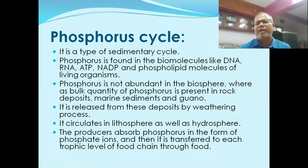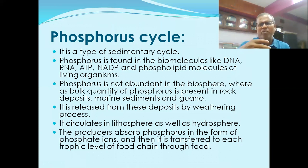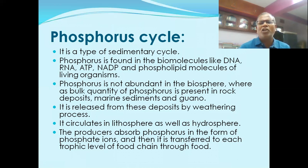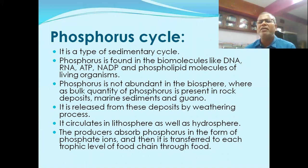Phosphorus is released from rock deposits by the weathering process. It circulates in the lithosphere as well as in the hydrosphere — that is, land and water. The producers absorb phosphorus in the form of phosphate ions, and then it is transferred to each trophic level of the food chain through food. Plants have the three key nutrients: N, P, K — nitrogen, phosphorus, and potassium.